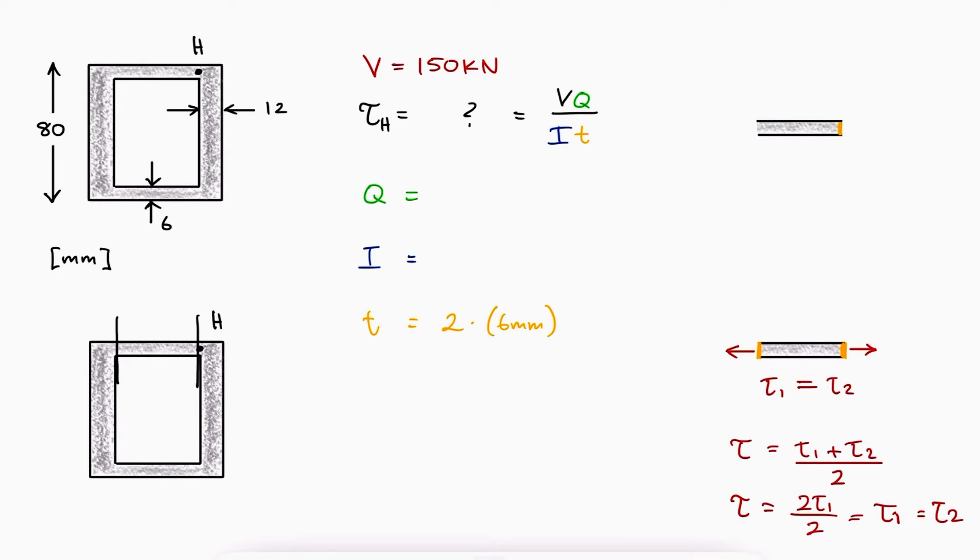We can alternatively take t to be only 6, in which case the total shear stress would be double of what we want. And therefore, we would need to divide the VQ over IT equation into 2. Notice that these two processes are effectively the same thing. So let's go with the first option.